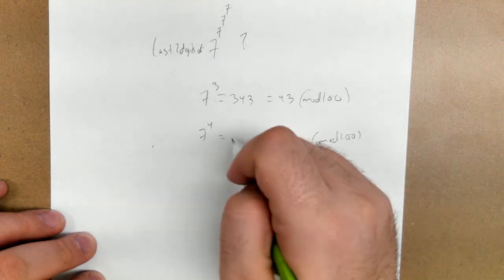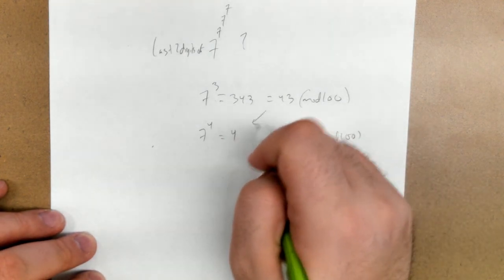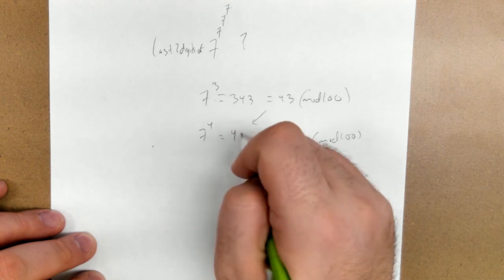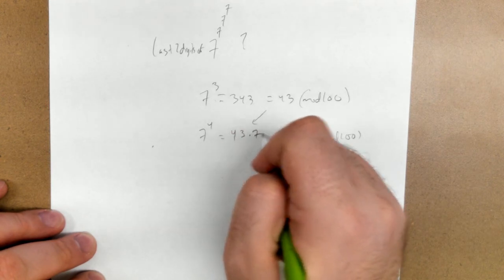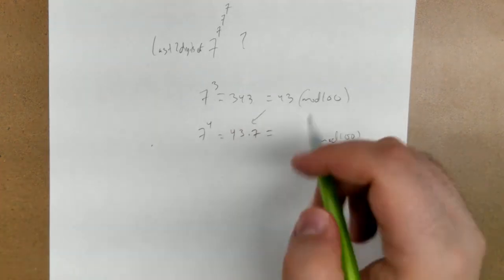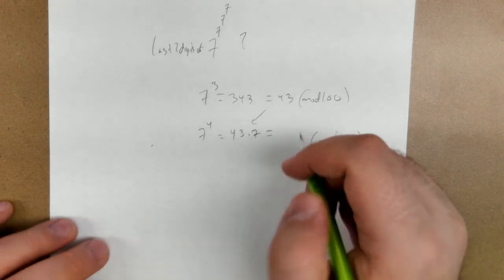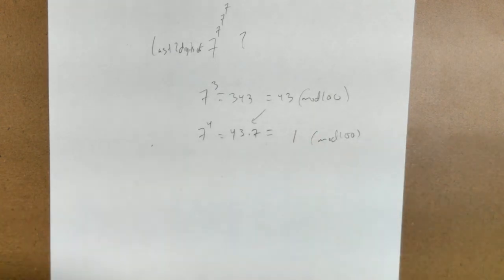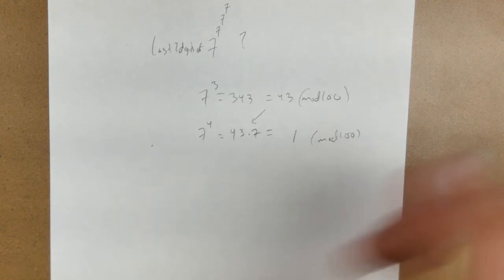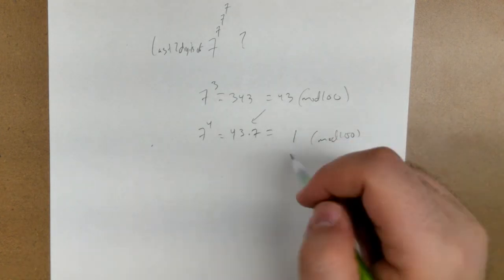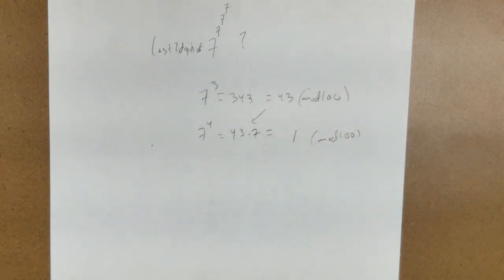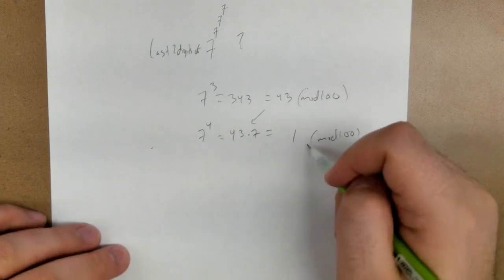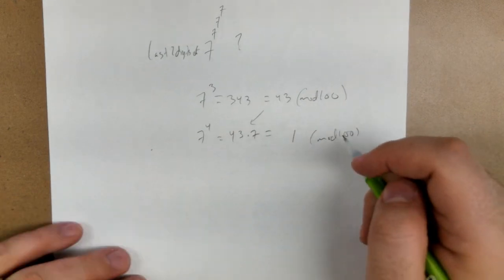7 to the 4th mod 100. Well, in mod arithmetic, you're allowed to mod part of it at a time. So 7 cubed is 343, which is 43 mod 100. 7 to the 4th, that's 43 times 7, which is 2401. So that's 1 mod 100 if I did this right. So I would get the same answer if I did the real math.